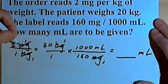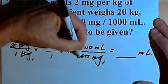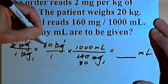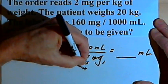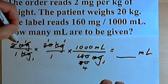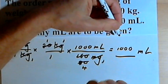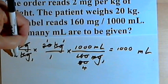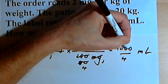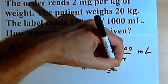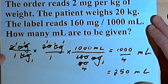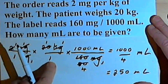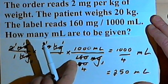Let's see if we can simplify some fractions. I've got a 2 in the numerator and 160 in the denominator, so let's divide both by 2 — that gives 80. I've got 20 in the numerator and 80 in the denominator, so divide both by 20 — the 80 becomes 4. Now multiplying across: 1 times 1 times 1,000 ml in the numerator, and 1 times 1 times 4 in the denominator, giving 1,000 over 4 ml, which simplifies to 250 ml. So we multiplied the order by the patient's weight by the on-hand information, and that gave us our answer.